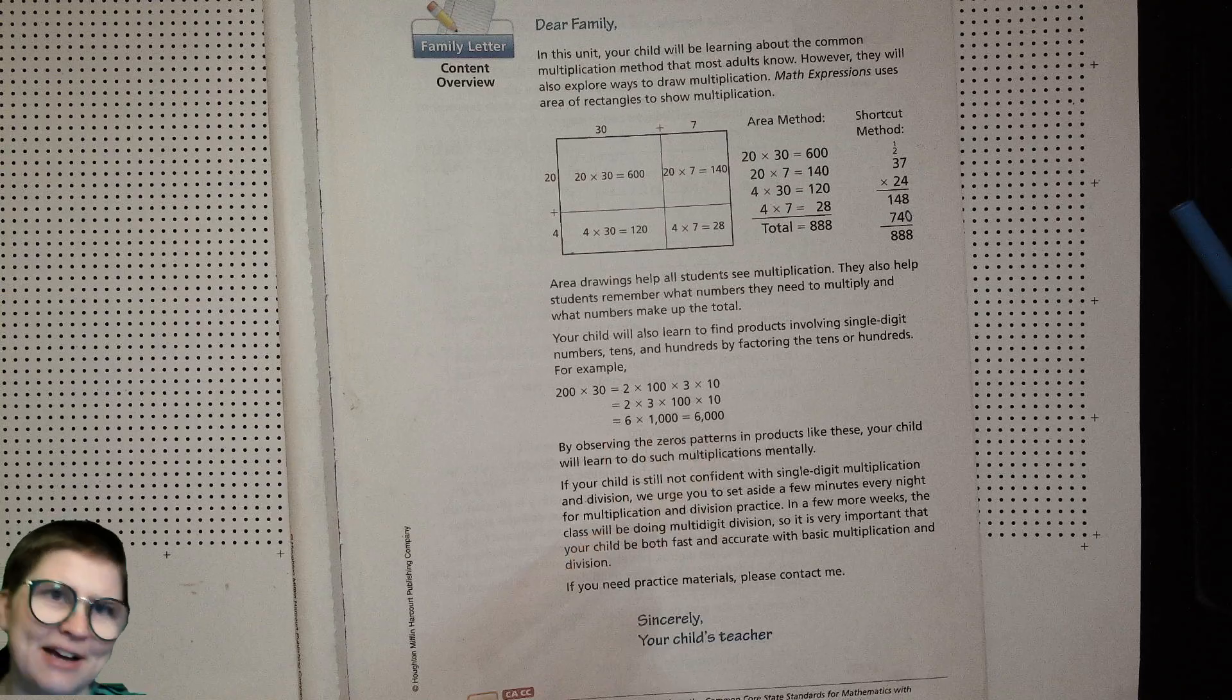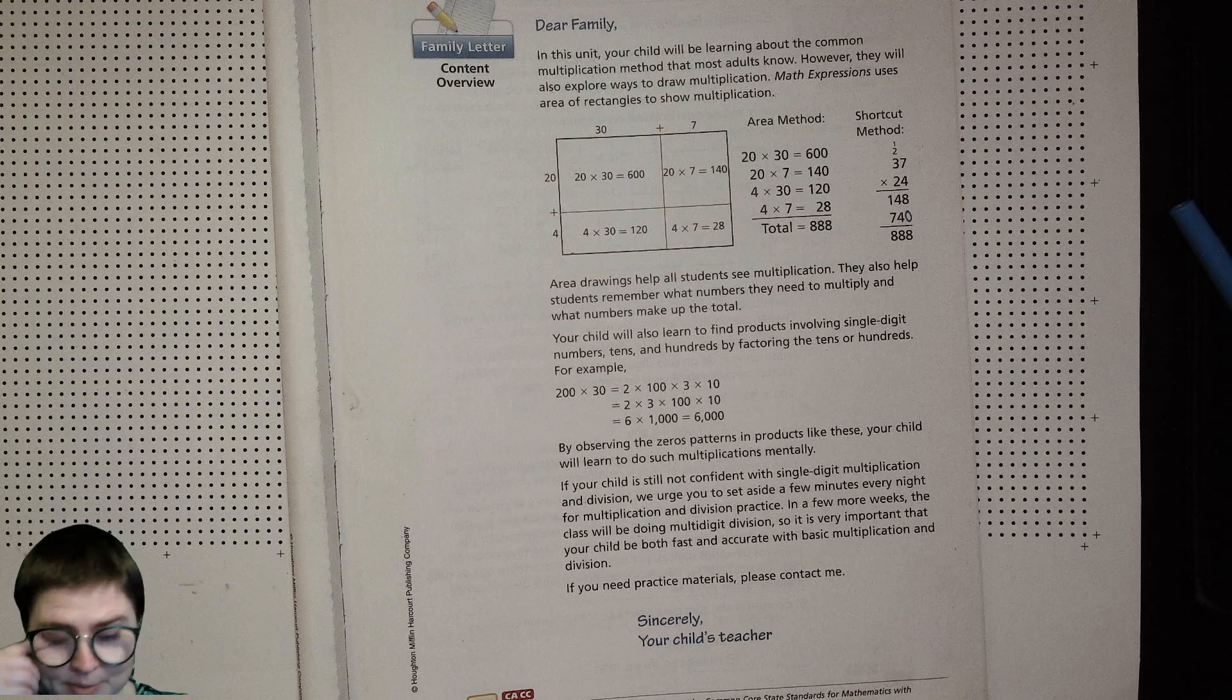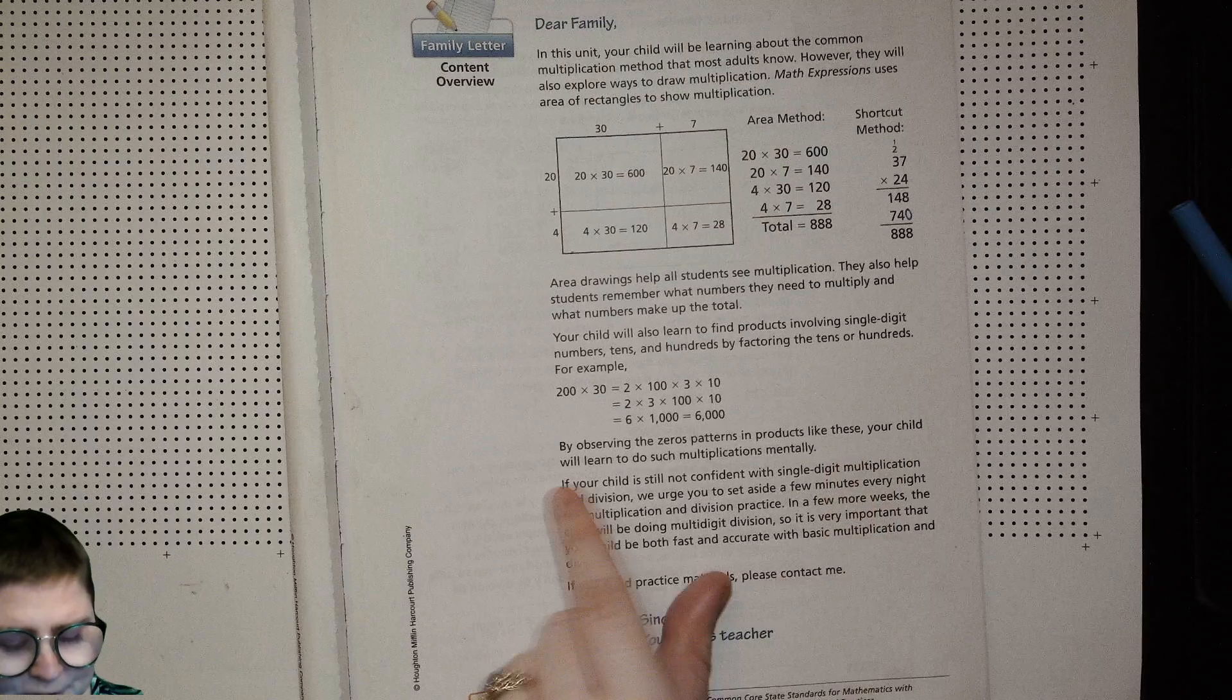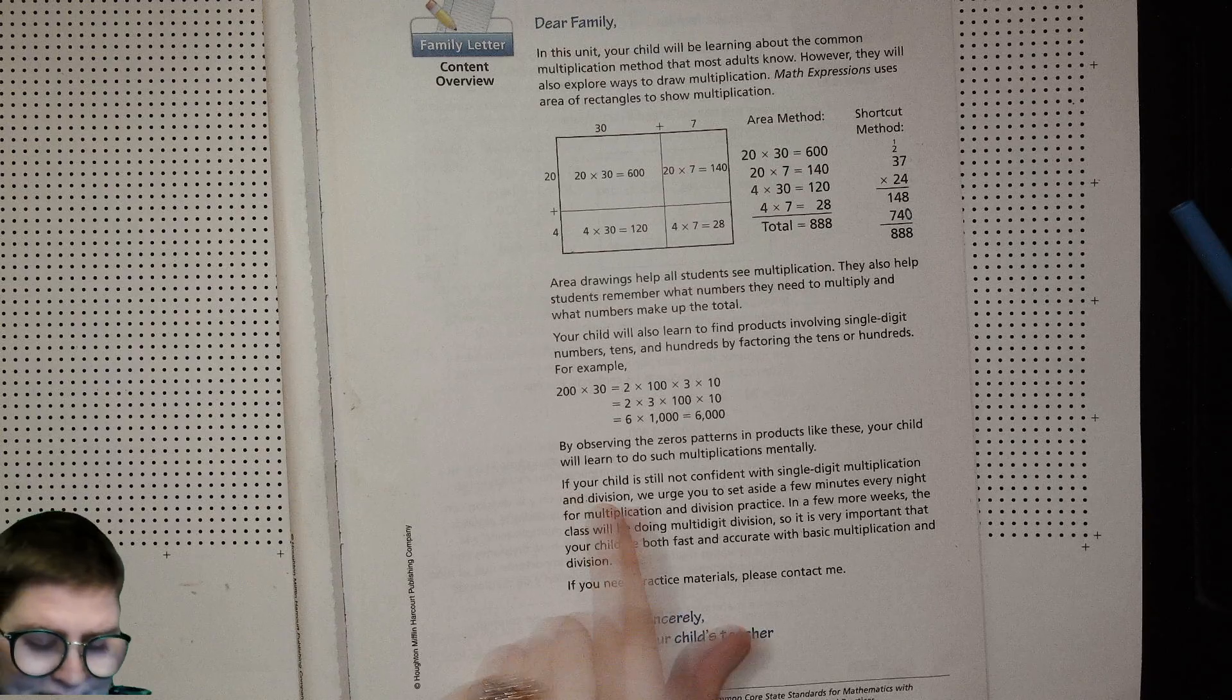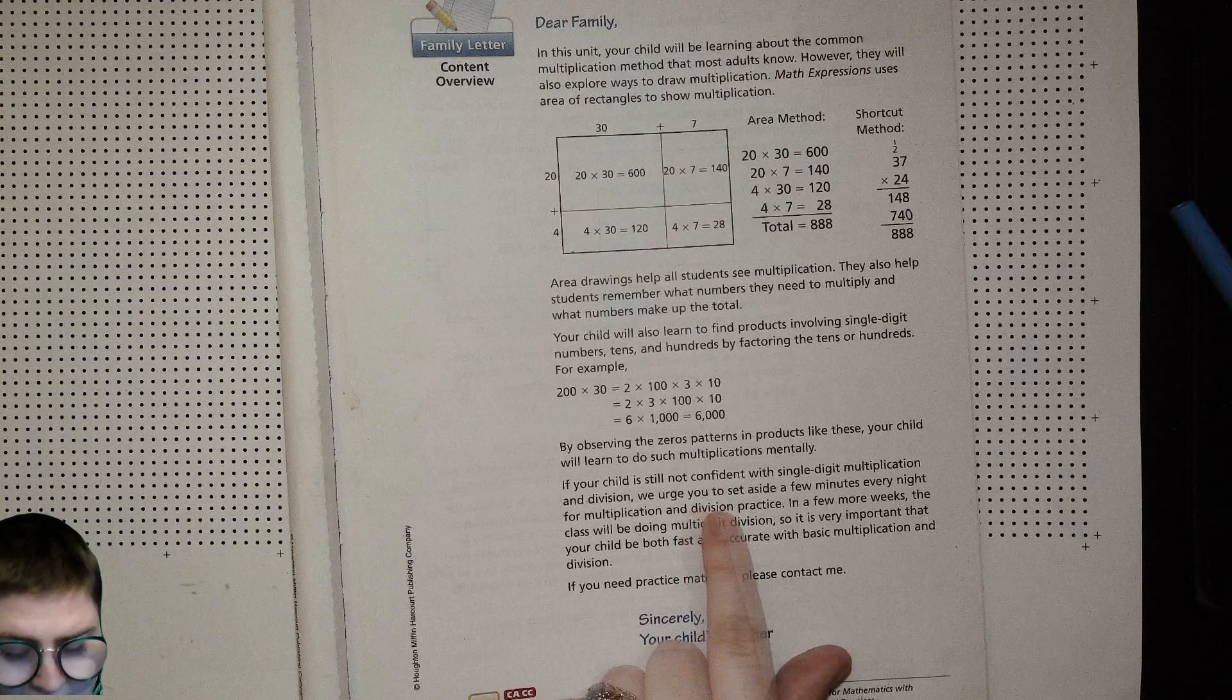And then 2 times 3 is 6 and 100 times 10 is 1,000, and then 6 times 1,000 is 6,000. So by observing zero patterns and products like this, your child will learn to do such multiplications mentally.